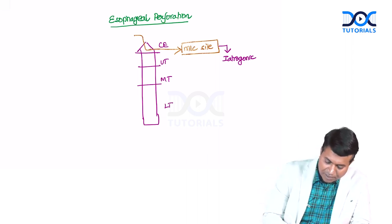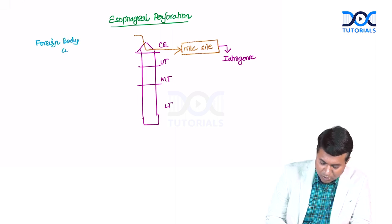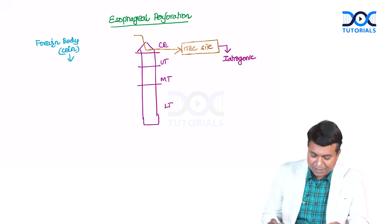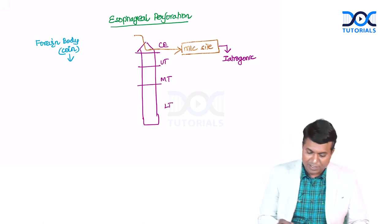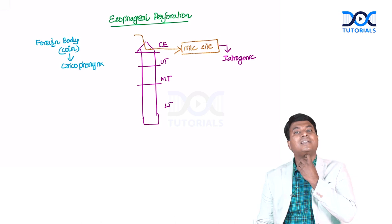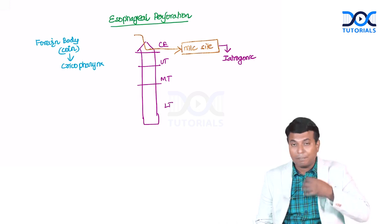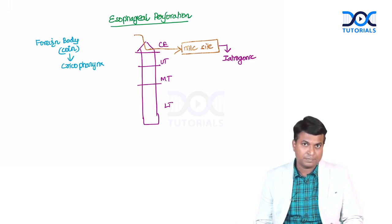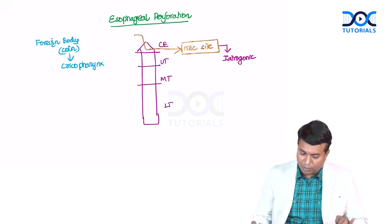Here are some interesting points. If a patient swallows a foreign body — for example, a coin — what is the most common site where it will get stuck? The most common and narrowest part of the GIT is the cricopharynx. The coin will get stuck in the cricopharynx. If you do not remove it earliest, it can jump into the trachea and cause respiratory obstruction.